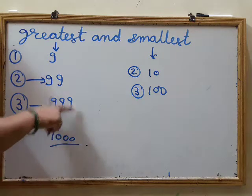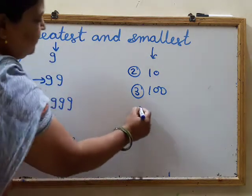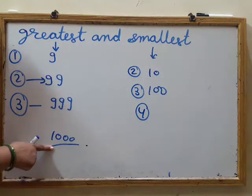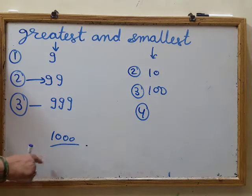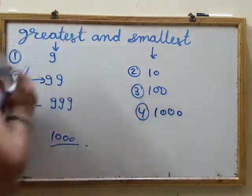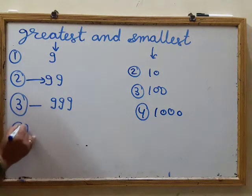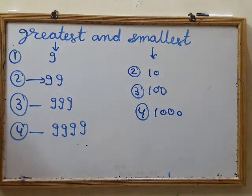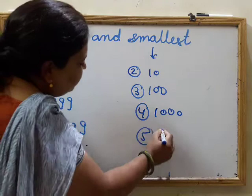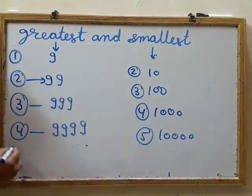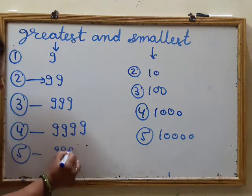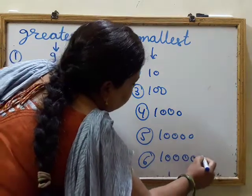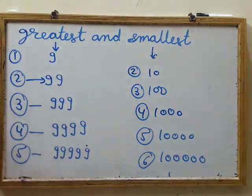The smallest four-digit number is 1000 — it is the first number in counting with four digits. The greatest four-digit number is 9999. The smallest five-digit number is 10,000. The greatest five-digit number is 99,999, and the smallest six-digit number is one lakh — 100,000.